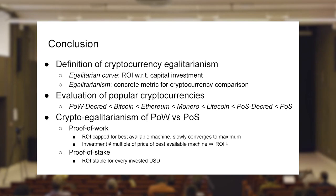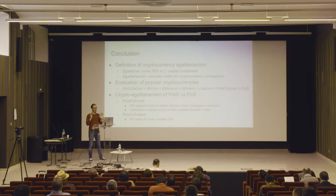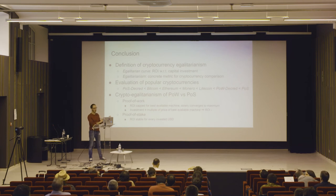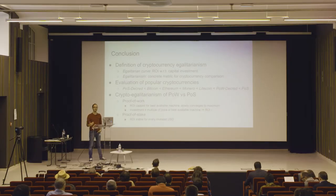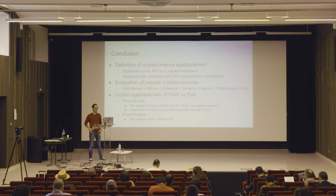In conclusion, we looked into the discussion about egalitarianism in cryptocurrencies and created a concrete metric to compare different systems. This metric allowed us to compare existing currencies and determine which is more or less egalitarian. Proof-of-work is in principle less egalitarian than proof-of-stake. The reason is that in proof-of-work you cannot do better than the best machine available on the market, and unless that machine costs one cent, egalitarianism will be worse. Thank you very much.